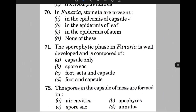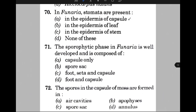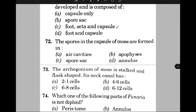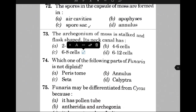The spores in the capsule of moss are formed in — the answer is C, that is the spore sac. The archegonium of moss is straw and flask-shaped; its neck canal has — the answer is C, that is six to eight cells. Which one of the following parts of Funaria is not diploid? The answer is D, that is calyptra.